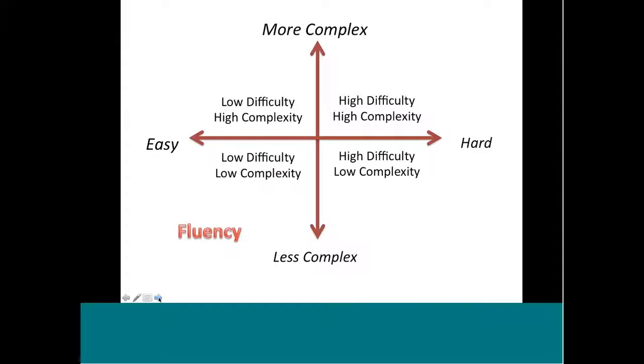In the low, low quadrant, we develop students' fluency, their procedural fluency, their conceptual fluency. In the high, low quadrant, we develop stamina. And there's a lot of kids who don't yet have a lot of stamina. We need lessons, tasks, assignments that build their stamina.